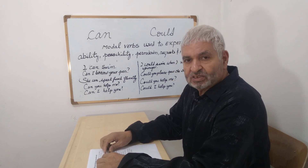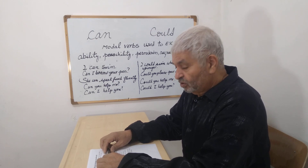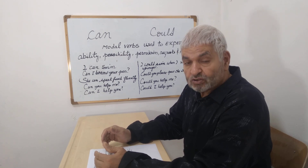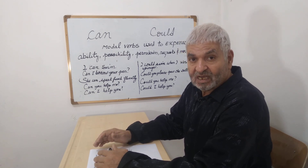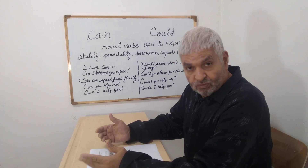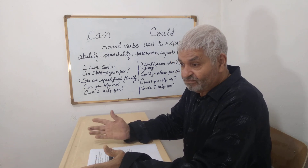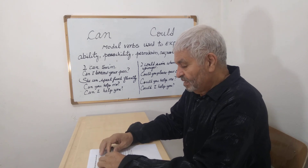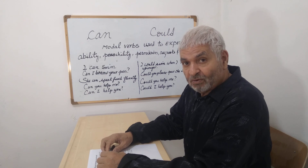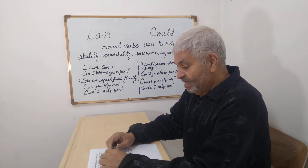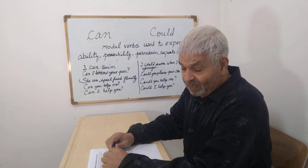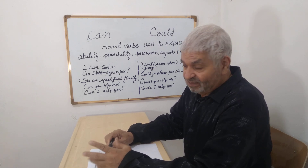When you use 'could', you use it for the past. You say 'I could swim when I was younger'. You could swim when you were younger, but today we don't know. 'I could play soccer when I was a little boy' — that means in the past you could play, but today you can't.